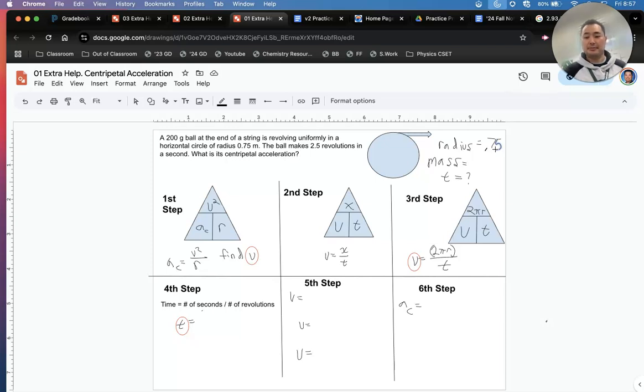You see mass? Yeah, mass. 2.5 is revolutions. So revolution means the pen goes around once. That's a revolution, right? That's one revolution. That's two revolutions.